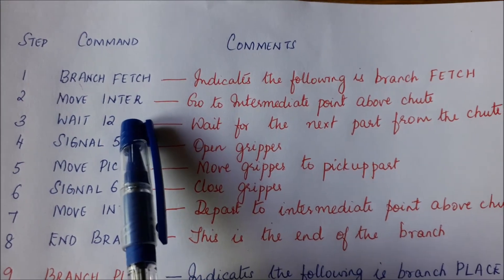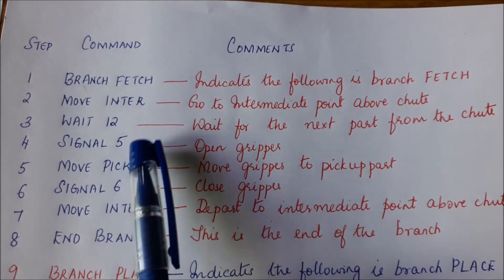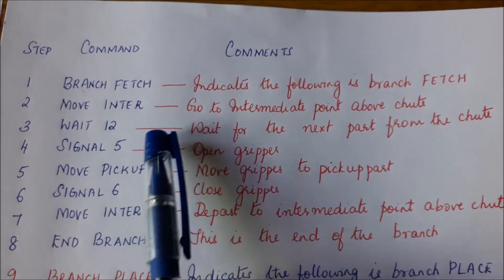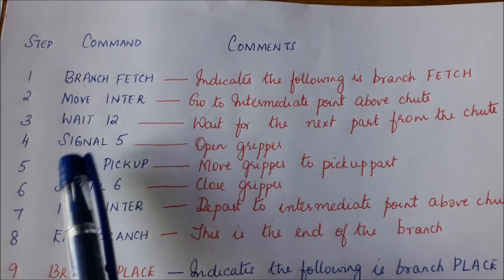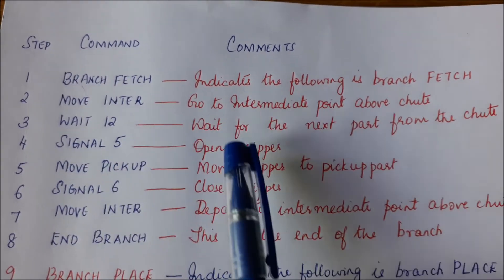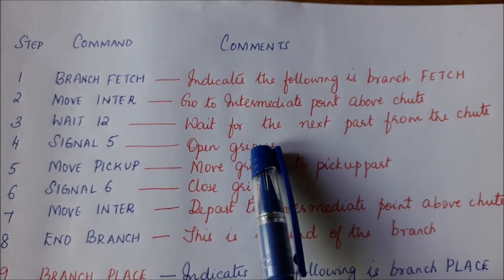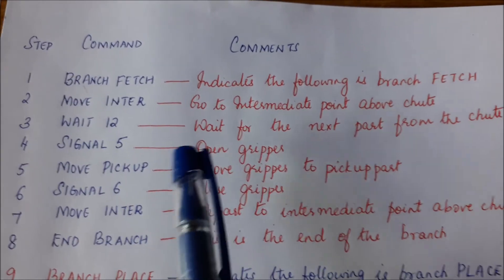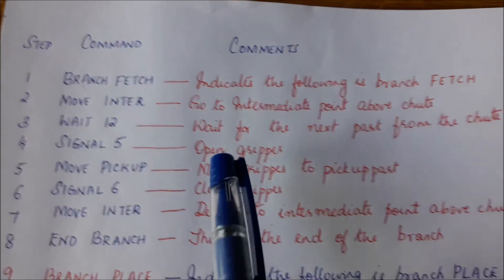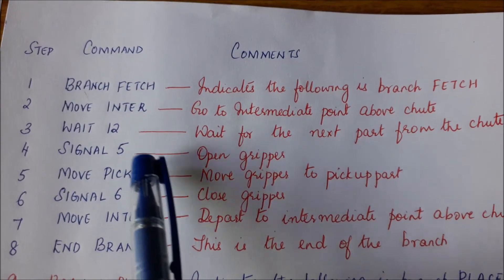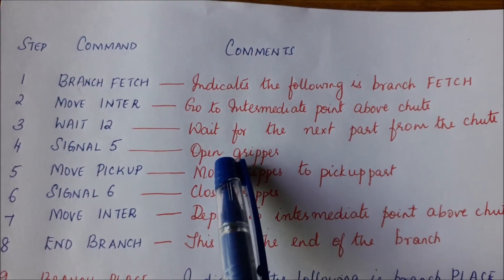So once that part has come, signal 5. So 5 is an output port that is connected to the end effector that is the gripper. Signal high on 5 says open the gripper. So you cannot go right down to the part and then open the gripper there. So before you move down to the part from the intermediate position, you will open the gripper.